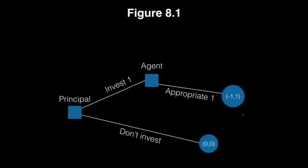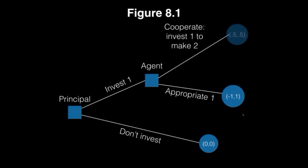Alternately, the agent could also cooperate and actually invest the money. They cooperate, they invest that one unit, and they get back two units. We're assuming here that they're going to split the profits from that investment evenly. So there's a profit of one that's made from this investment, and 0.5 goes to the principal and 0.5 goes to the agent. So these are our payoffs in this game.